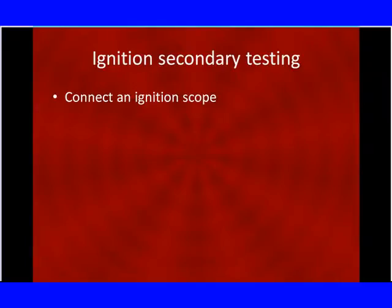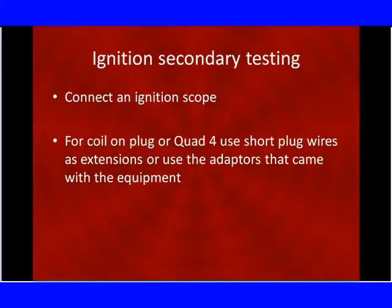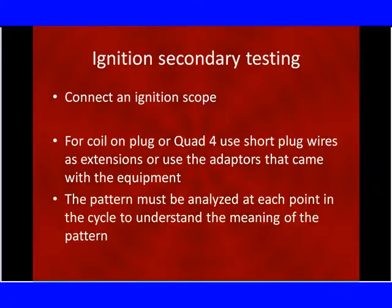We found all we can find out except what's the cause of this misfire. So we're going to connect our ignition scope to the secondary or primary depending on the vehicle. For coil-on-plug or similar vehicles where the coil is mounted directly to the spark plug, you can use short extension wires as extensions or adapters that came with your equipment. What we want you to understand is that this ignition pattern has to be analyzed at each point in the cycle.